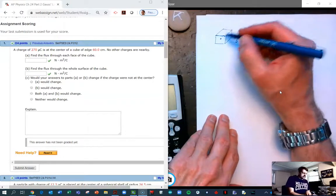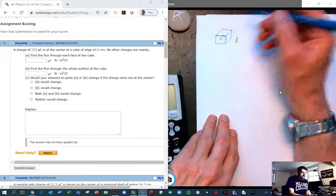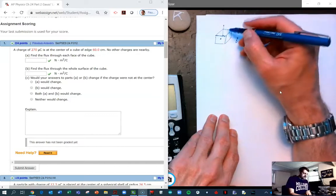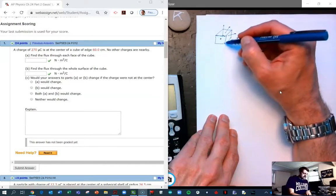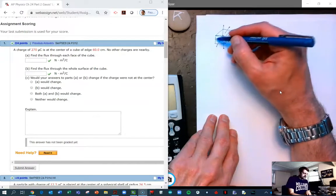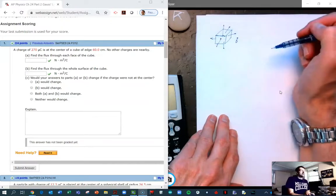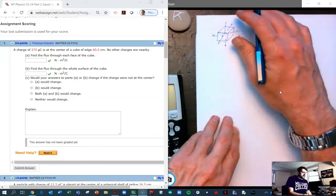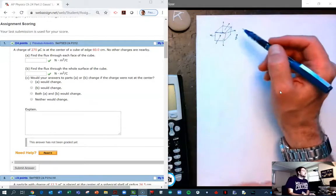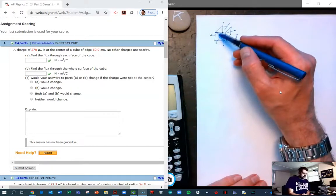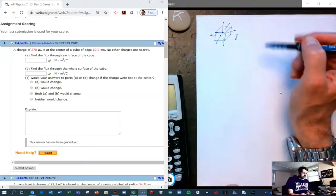And the charge inside is producing an electric field. And so there's an electric field that's equal distant because it's at the center. It is equal through all six sides of the cube. So we're looking for the flux through each face and we're looking for the flux through the whole surface.